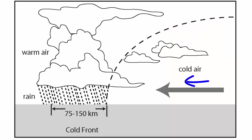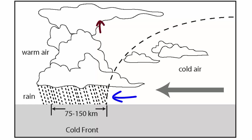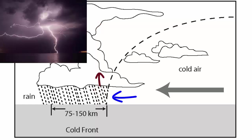When cold air is the one advancing and warm air is already in the area, the cold air will shove its way under the warmer air. The warmer air gets pushed upwards rapidly, making the air cool and lose its moisture in a very narrow belt of intense rains. The rapid upward movement of the air can also rip electrons off the gas molecules in the air and generate lightning.